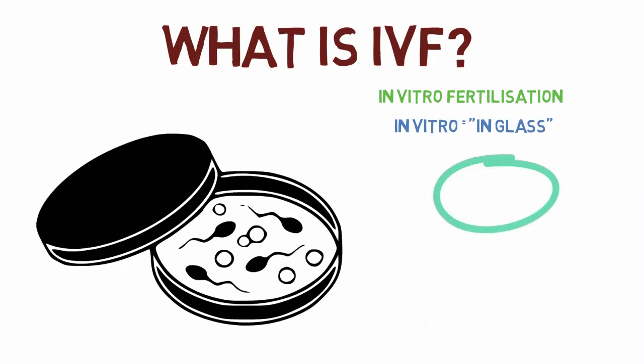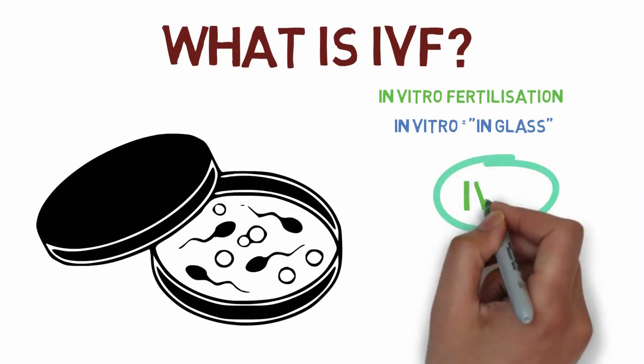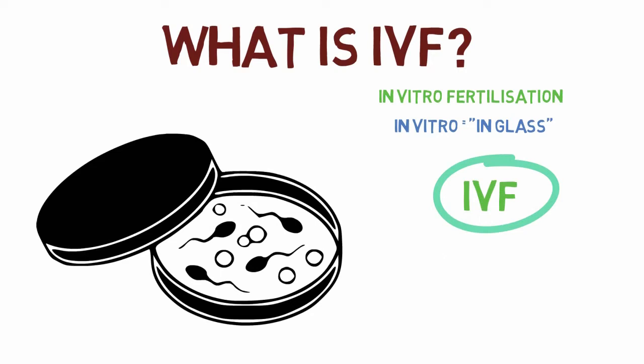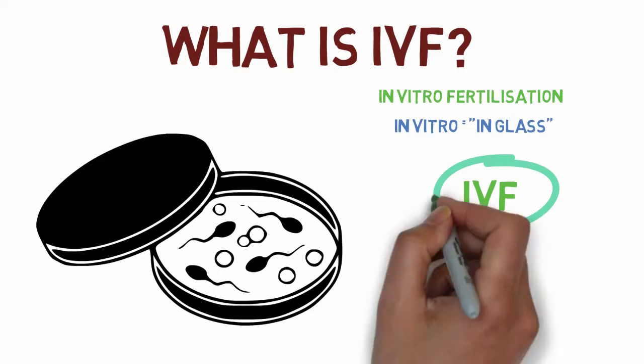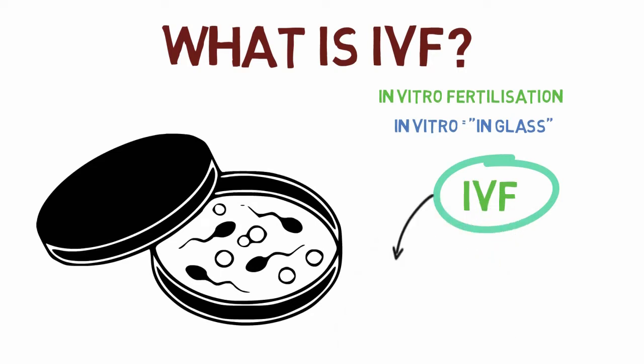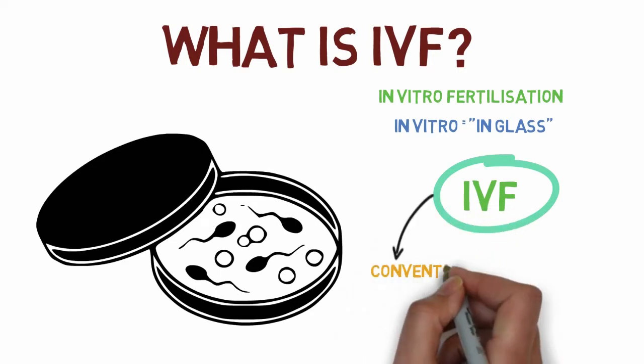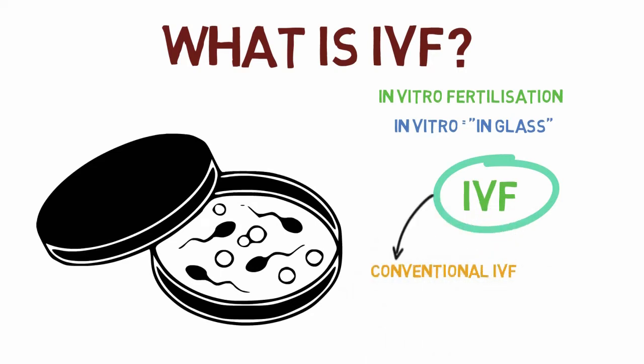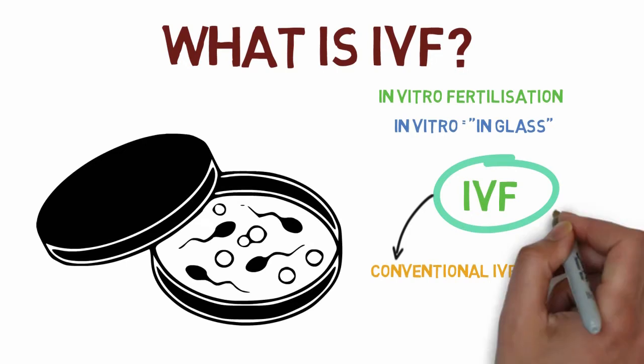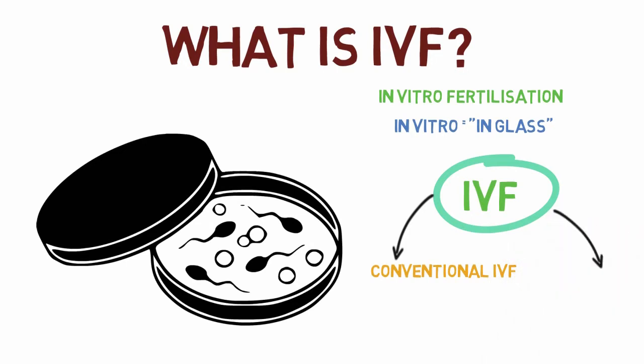To achieve fertilization as part of the IVF process, two techniques are used. The first is conventional IVF, and the second is ICSI, which is short for intracytoplasmic sperm injection.